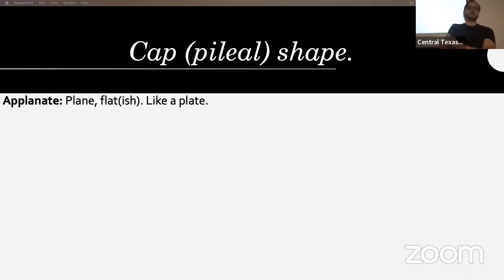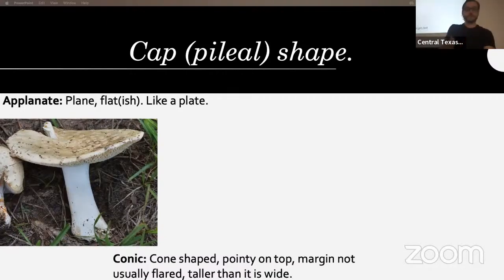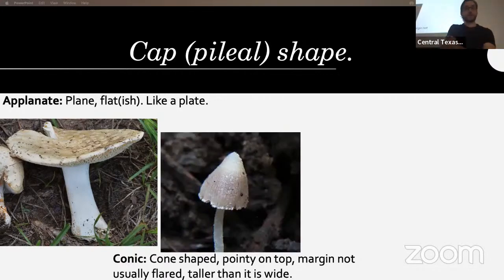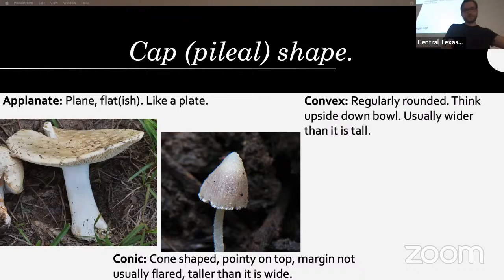For cap shape — applanate means it's plain, almost like a plate, with no real rounding. Conic is shaped like a cone, pointy on top with a margin that's not usually flared — the margin is the very bottom of the cap — and conic caps are usually taller than they are wide.